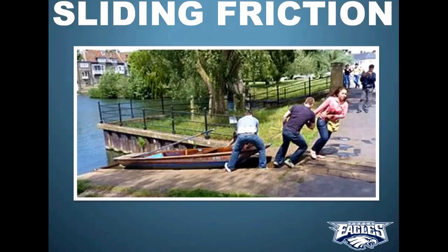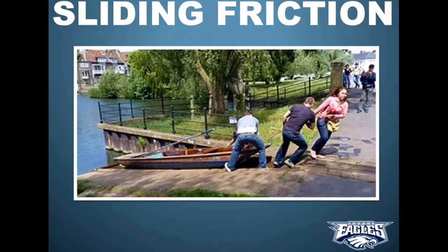Why would static friction be more than sliding friction? The amount of friction depends on how much contact you have. When you look at static friction versus sliding, static friction has lots of contact areas — the object is just sitting there with all the contact present. But once you start sliding, some of those contact areas break and they start forming new ones as you slide, but there's just not as many. If you stop again, everything has time to make contact again, and you have to overcome static friction again. But as long as you keep it moving, you'll always have sliding friction, which is easier to overcome.